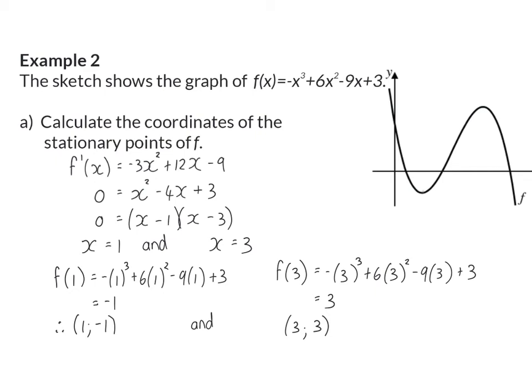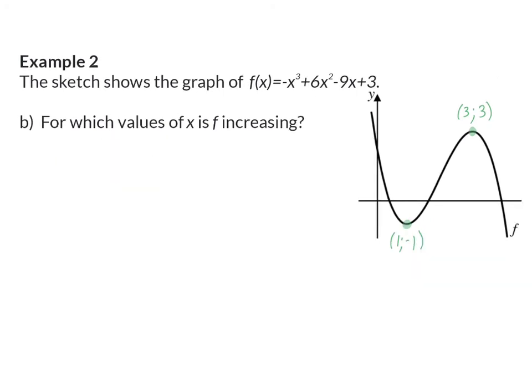If we go and have a look at the graph, we will see that these two stationary points are the turning points of the graph. Question b: for which values of x is f increasing? We know that increasing means there's a positive gradient and it is moving up from left to right. So on the graph, that will be in between the two turning points. We need to answer the question in terms of the x values. The x value at our first stationary point is one, and the x value at our second stationary point is three.